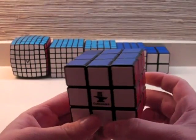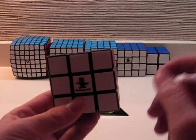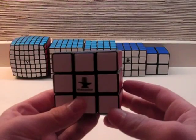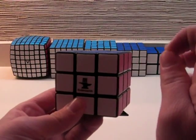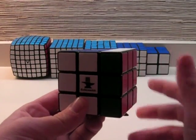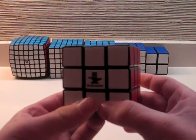So, the notation. If you were to see an R, a capital R in notation, as you can see in the annotation at the bottom, a capital R means turn the right side. Now, if it's just a capital R, you turn the right side one turn clockwise. And clockwise is as if you're looking at the face.